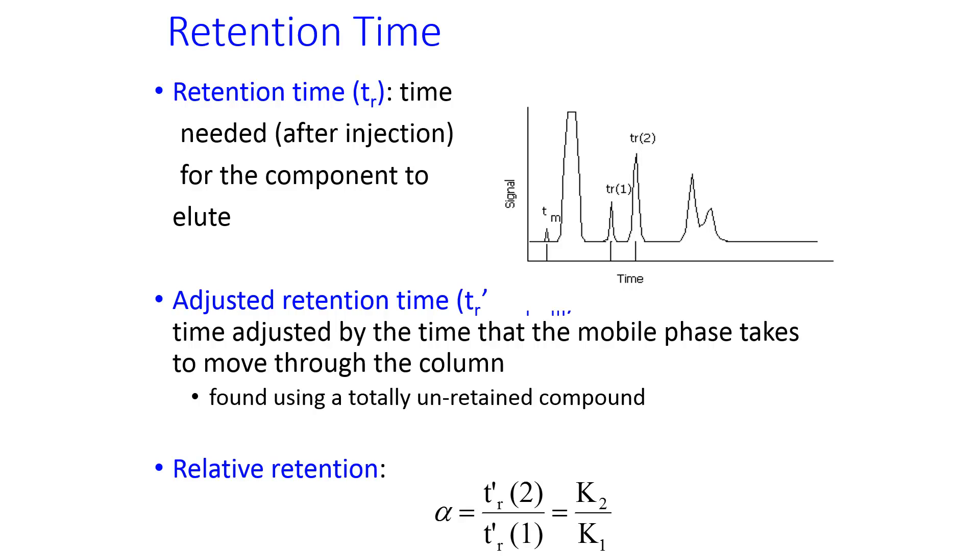The relative retention between those two peaks gets the symbol alpha. And it's found by taking the ratio of their adjusted retention times. This is also the ratio of their partition coefficient.